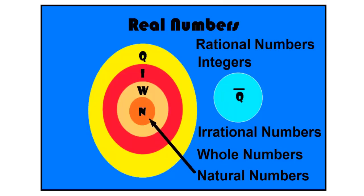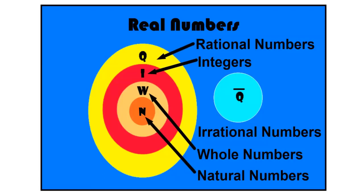Natural numbers would be found in the middle. Whole numbers also encompass natural numbers. Integers encompass natural numbers and whole numbers. And rational numbers encompass all three.